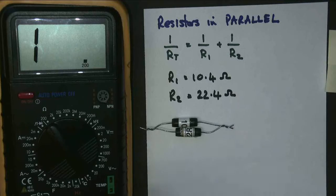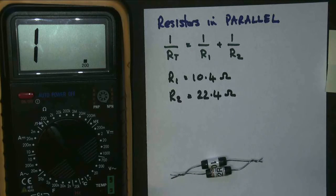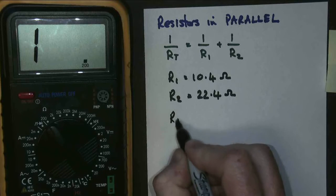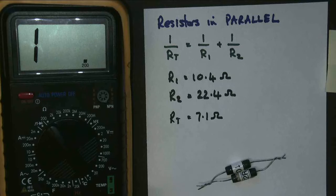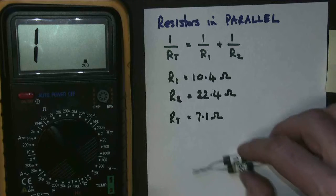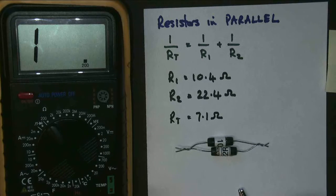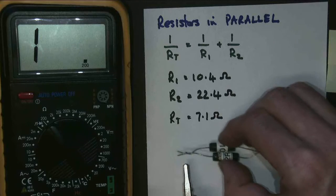That seems reasonable. So let's write that down. This is our prediction. So RT equals 7.1 ohms. Notice that when you have two resistors in parallel, the total is always less than the smallest resistor. Let's see how good our value was.